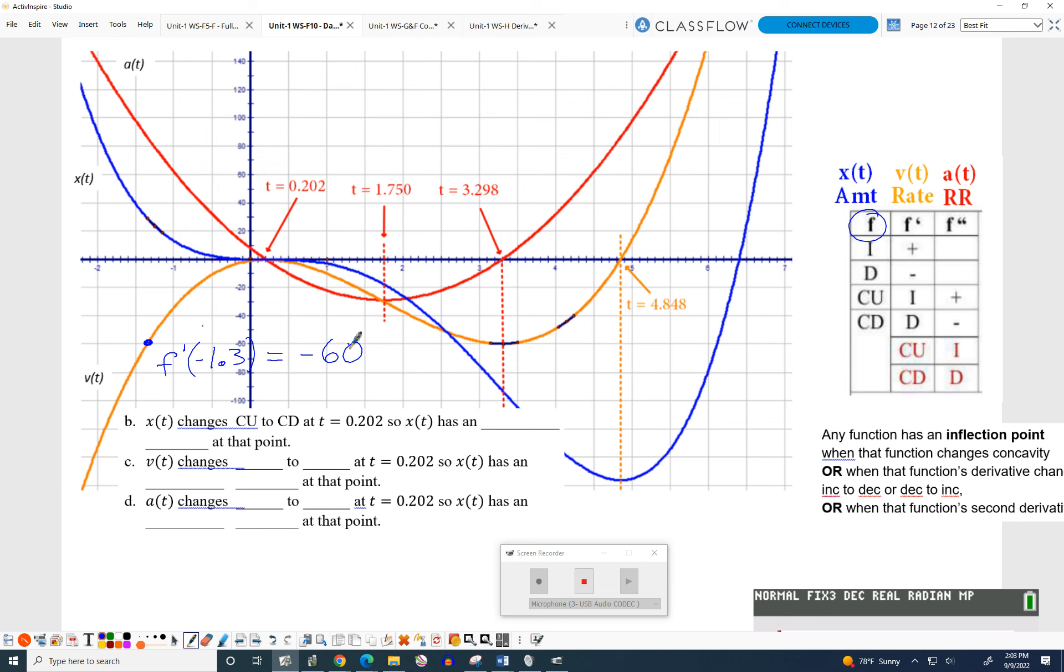This means something on the graph of f. What does this mean, Tucker, on the graph of f? Does it mean that x equals negative 1.3 for the graph has a slope of negative 60? That's exactly what it means. So I go straight up. That slope right there, the tangent slope of f at x equals negative 1.3, is negative 60.